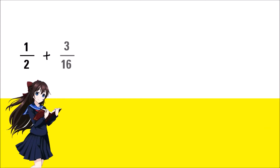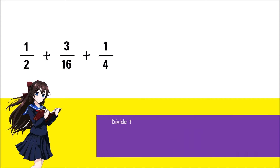Another example: let's add 3 unlike fractions — 1 half plus 3 sixteenths plus 1 fourth. Before we list the multiples of 2, 4, and 16, let's do some division first. Divide the highest denominator 16 by 2 and 4. 16 divided by 2 is 8, and 16 divided by 4 is 4. If the remainder of both answers is 0, or no remainder at all, then the LCM of 2, 4, and 16 is 16, the highest denominator.